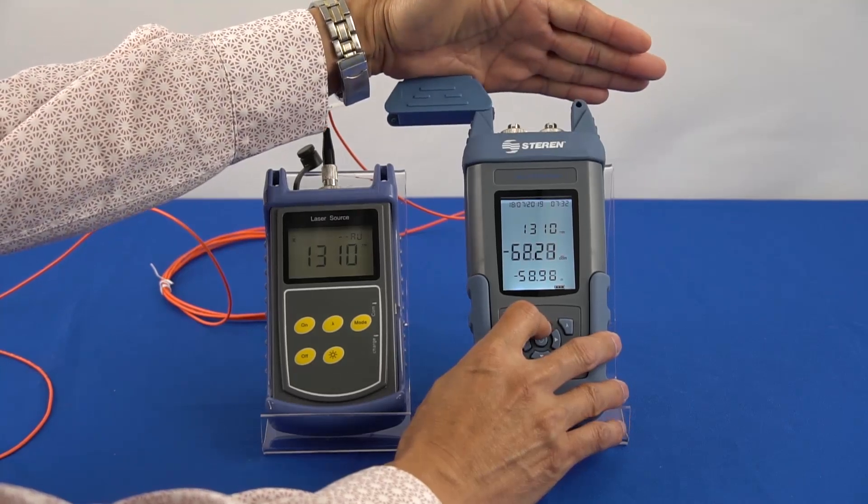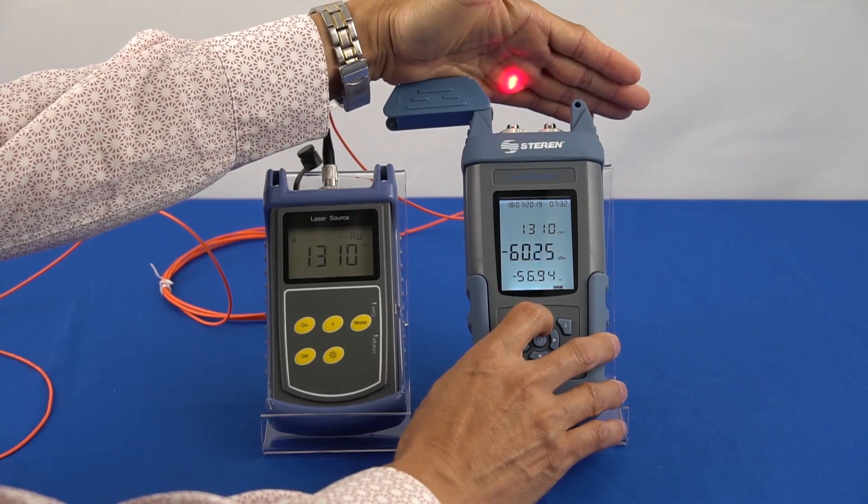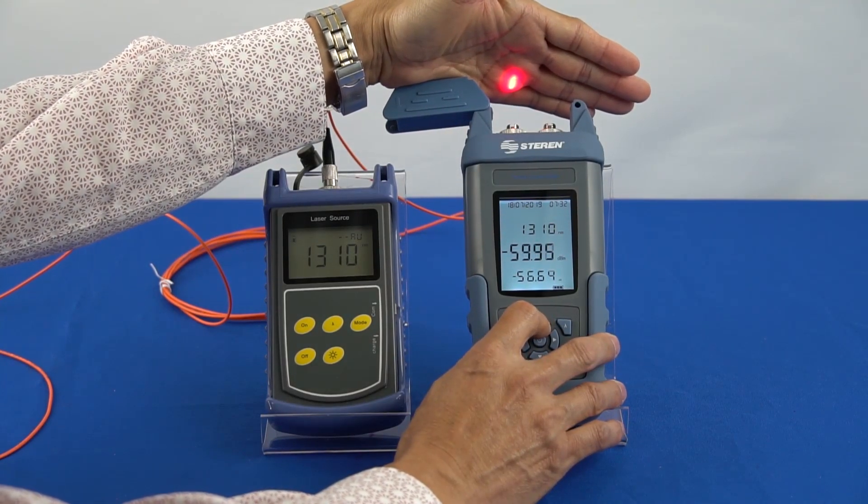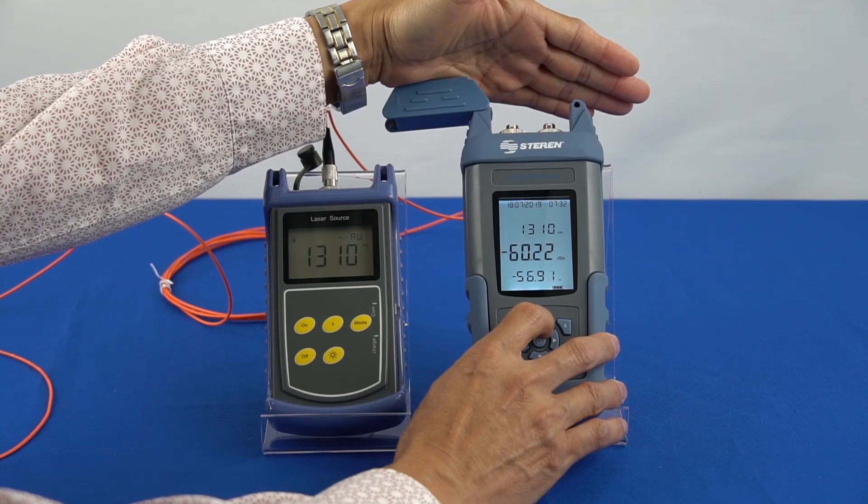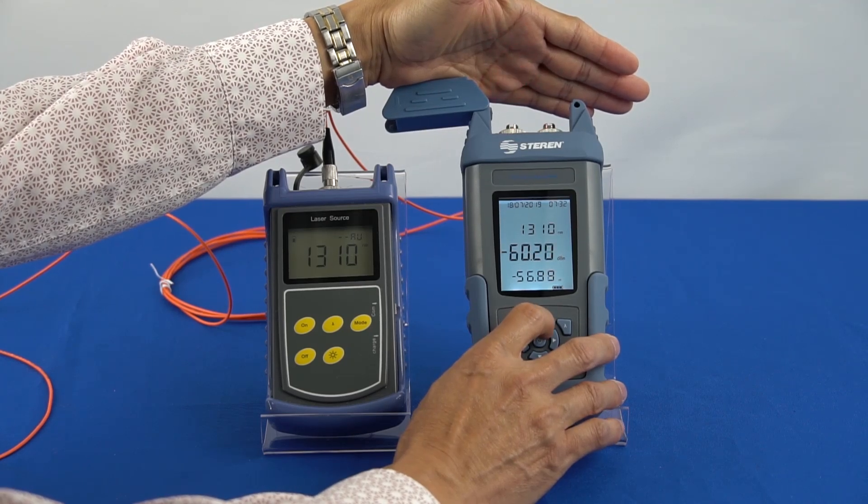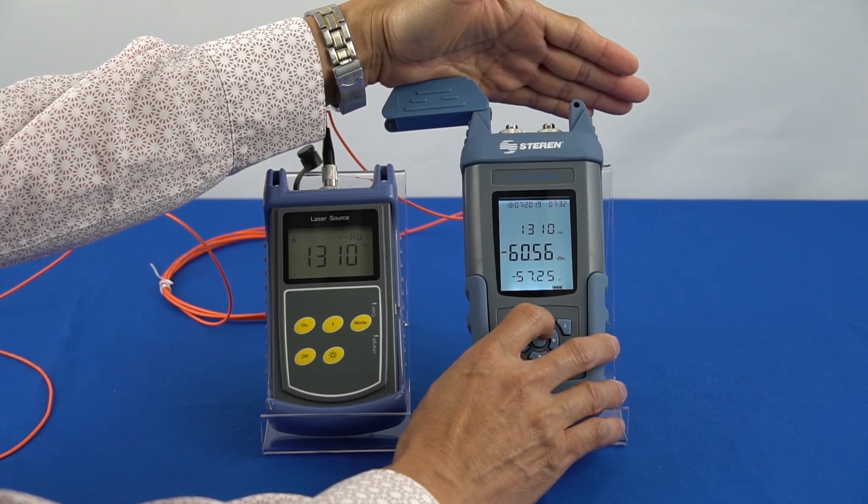Press the up button to output a continuous light source. Press the up button again to output a pulse light source, and then press the up button once more to turn the light source off.